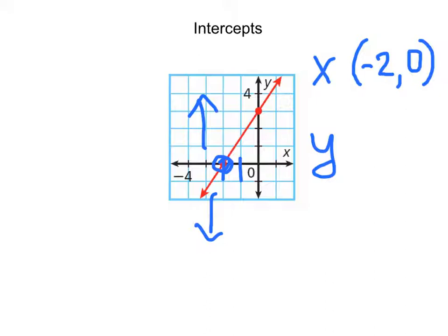Now let's look at the y-intercept. It's right here. Ask yourself, what would be the value of x and the value of y at that point? Well, for the value of x, if you're right on the y-axis, x would be 0. Because if x was positive, it would be to the right of the y-axis, and if it was negative, it would be to the left. And what's the value of y at that point? It's 1, 2, 3 — that's right, it's 3.